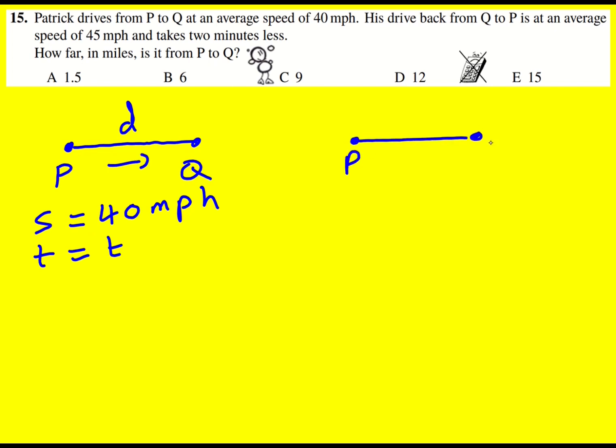Then we're going to go from Q to P, same distance, but now the speed is 45 miles per hour. And the time is the same time but it's two minutes less.